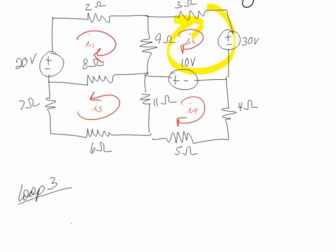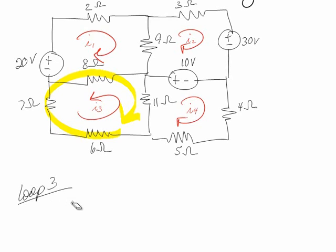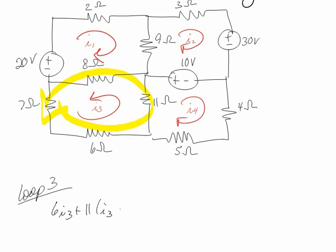Loop 3. Anywhere you want to start is fine. I like to start with voltages but you don't have to. How about 6I3, plus 11 — I3 is going with me and I4 is going with me too, that is very helpful — then I get to 8, and I3 is going with me and I1 is also going with me. Then I get to 7, and 7 just has a little I3 on it, and that's equal to 0.